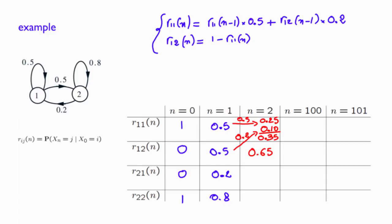But suppose that I tell you the number for n equals 100. And I tell you that the number that you obtain here is about 2 over 7. So as a result, the numbers that you are going to have here is about 5 over 7.